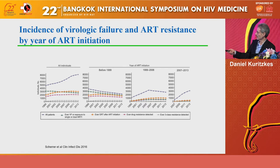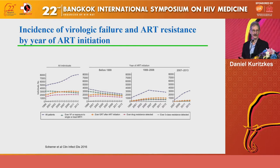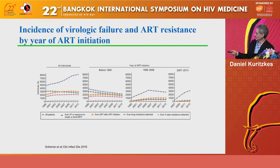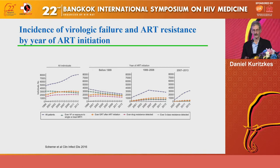Those who had genotyping performed at treatment initiation increased, and those who ever had drug resistance increased somewhat as well. But breaking this down by era, those who started therapy before 1999 contributed the most in terms of drug resistance. For the most recent period from 2007 to 2013, there was a big increase in the number of people starting on therapy, but very few had any evidence of drug resistance, and hardly anybody had triple class resistance.